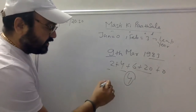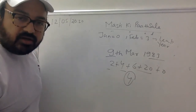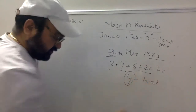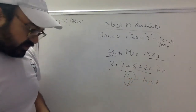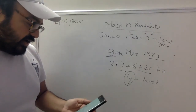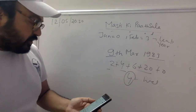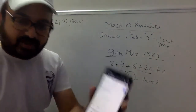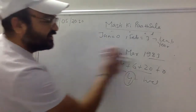Remainder 4 — Sunday को 1, Monday को 2, Tuesday को 3, Wednesday को 4. तो 9th March 1983 was Wednesday! चेक करें — it is Wednesday. Agreed?